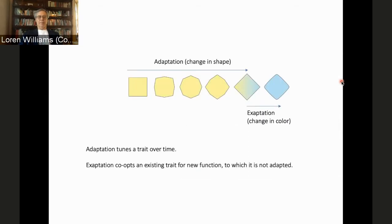So I want to talk about a little bit about the symbolism we have developed to talk about this. If you look here, you can see, when I show a change of shape, a gradual change of shape, that is to represent adaptation. And then a more precipitous change in color represents exaptation. So adaptation tunes a trait over time, generally in response to some selective pressure. And exaptation co-opts or steals or borrows an existing trait for a new function to which it is not adapted.